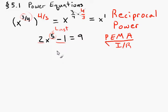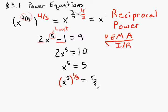So, this will be happening last. First thing we're going to do is add 1 to both sides. 2x to the 5th is equal to 10. Now we divide by 2. x to the 5th is equal to 5. Finally, we're going to get rid of that exponent.